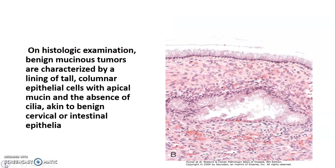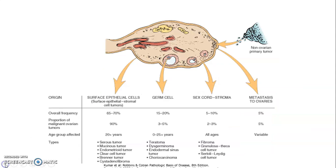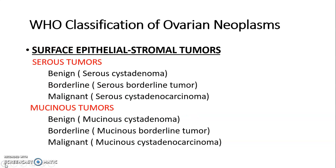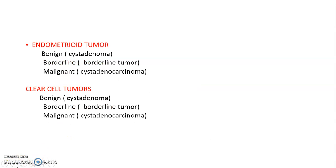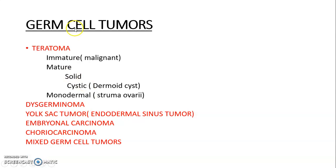This is a very important topic and exam questions cover the classification of ovarian tumours. Surface epithelial tumours include serous and mucinous tumours, with serous being more common. Of these, 70–80% are benign. In germ cell tumours, short notes on teratoma are commonly asked.